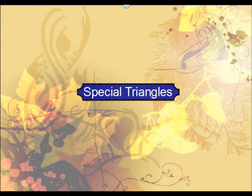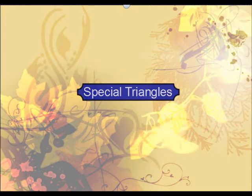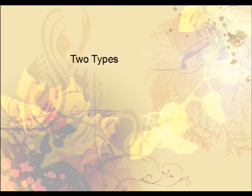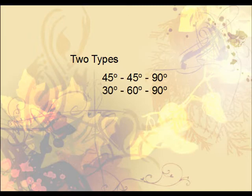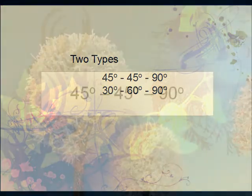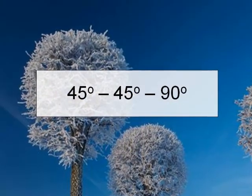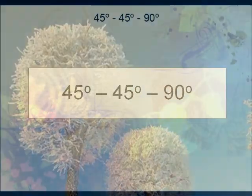This video focuses on special triangles — two types. Rather than going into where all the values come from, we'll focus on how to use what you know about special triangles to find missing sides. There are two types, named by their angles: the 45-45-90 triangle and the 30-60-90 triangle.